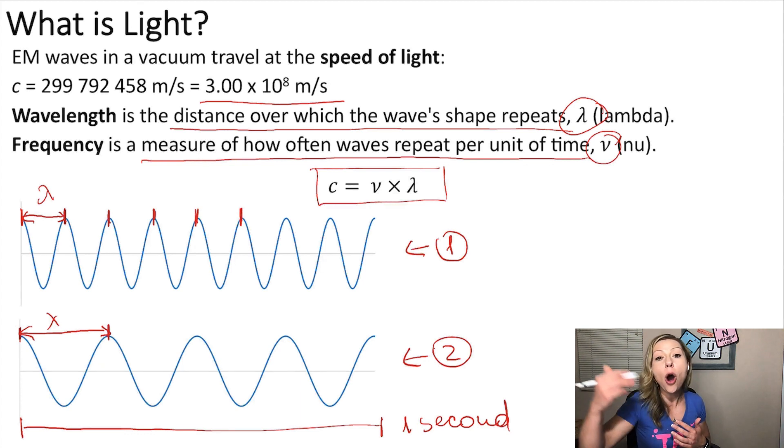then we can figure out the frequency. So, how often the waves repeat per one second? So, in wave one, we can see that we have one, two, three, four, five, six, seven, eight repetitions. In wave two, we have one, two, three, four repetitions.